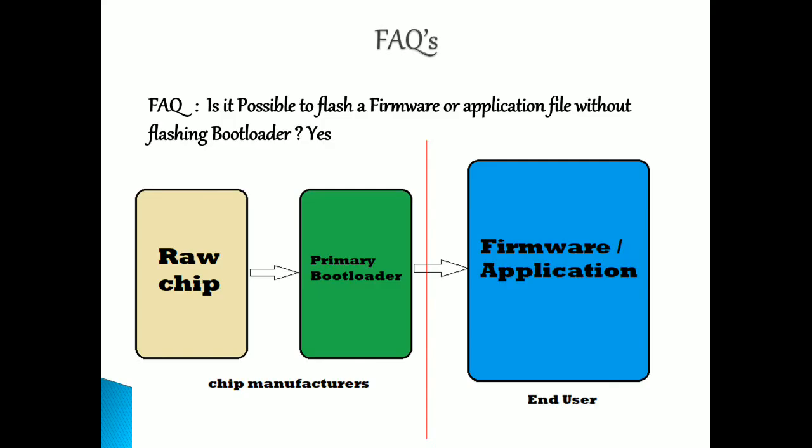Without the secondary bootloader, if you want to change any calibration values or anything else, you have to take the ECU out and flash through a debugger. So if you need to make frequent changes, it is highly recommended — in fact compulsory — to use a secondary bootloader on top of the primary bootloader, and then place the application or firmware. With the secondary bootloader, you can easily flash via CAN or Ethernet instead of J-Link or JTAG. A debugger like J-Link is different from CAN or LIN, which are communication protocols, and communication protocols are much easier to use for flashing.